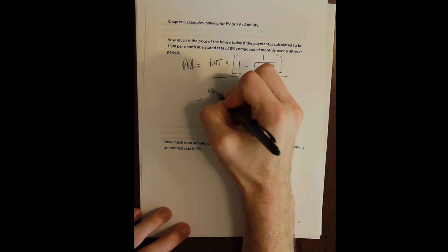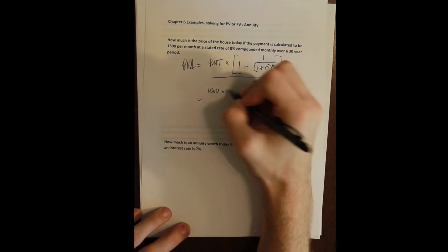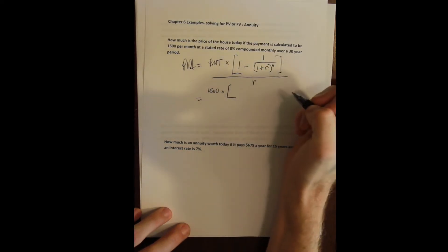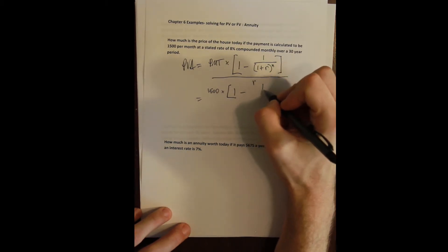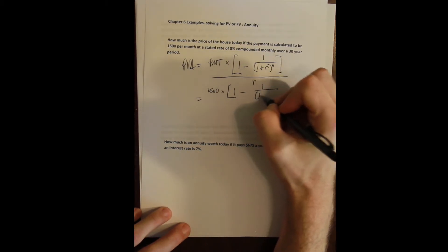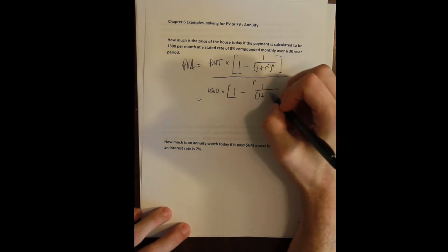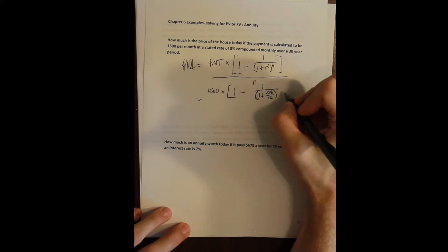The payment is $1,500 per month. And notice month means we need to convert everything else to a monthly period. So 1 minus 1 divided by 1 plus the rate per month. And our stated rate is 8%, so that's our APR. Convert that to months by dividing by 12.